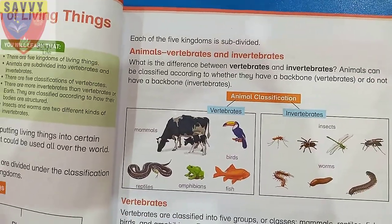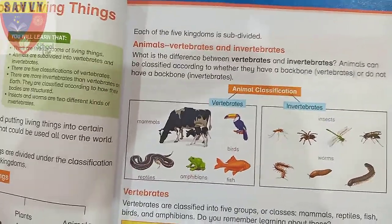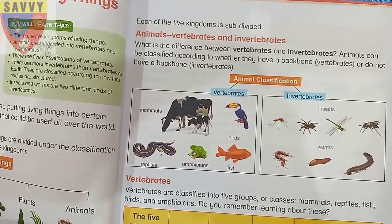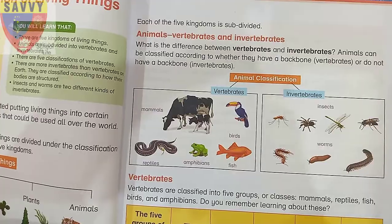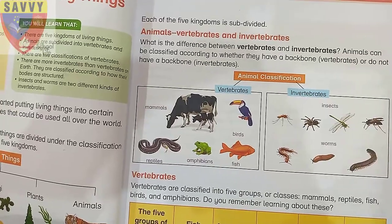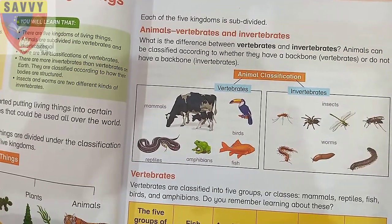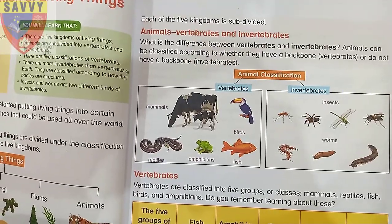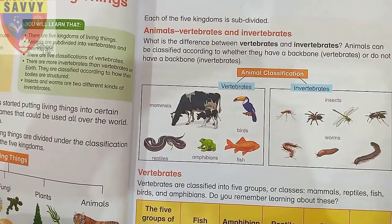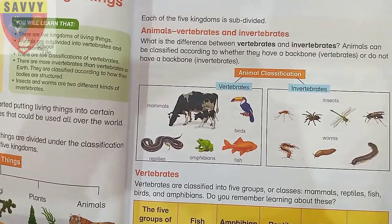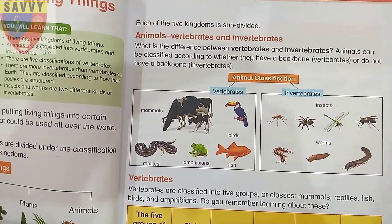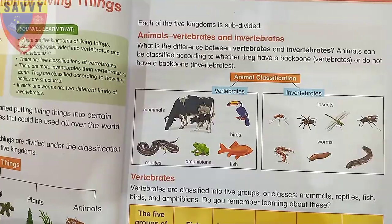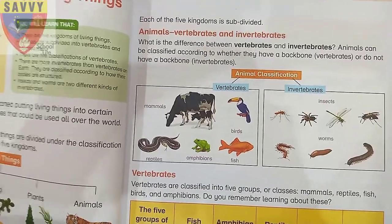Animals are classified as vertebrates and invertebrates. Animals can be classified according to whether they have a backbone. If they have a backbone, they are called vertebrates. If they don't have a backbone, they are called invertebrates.